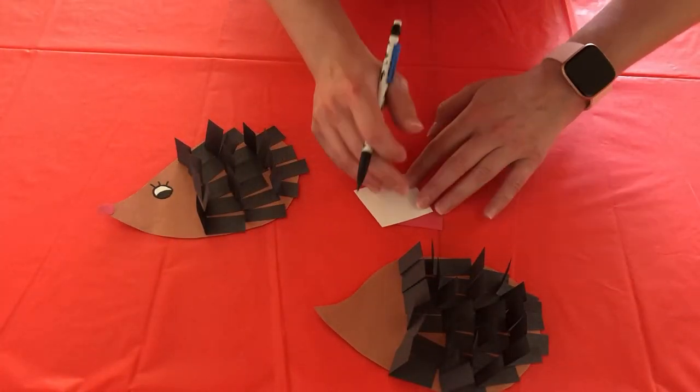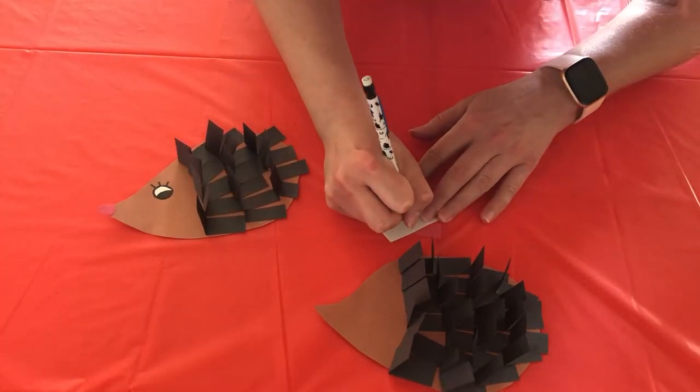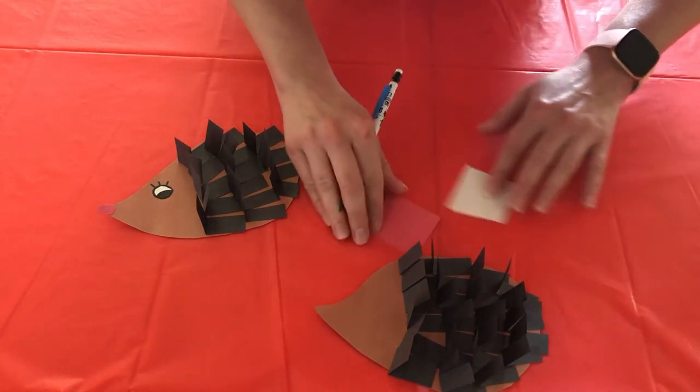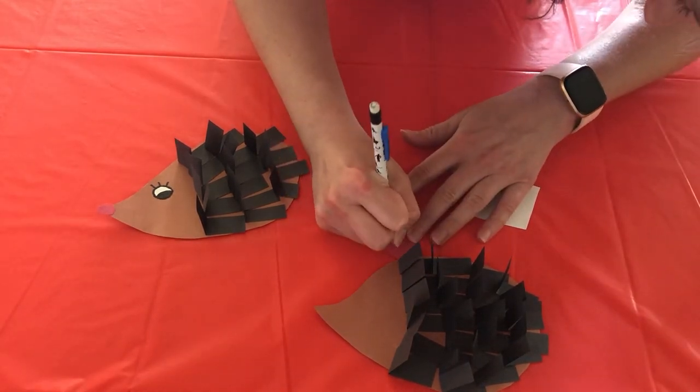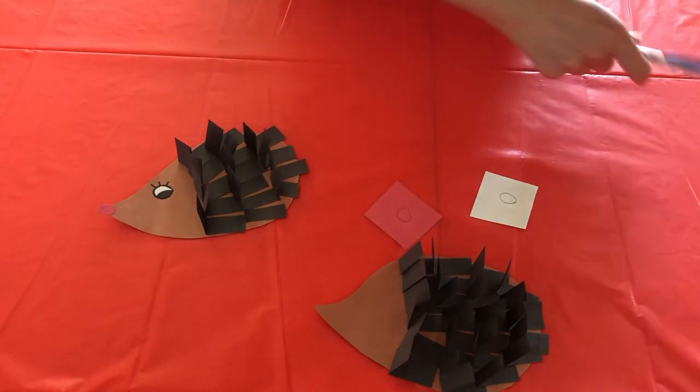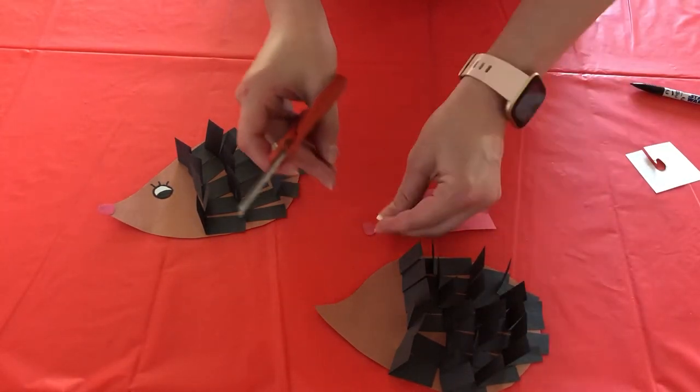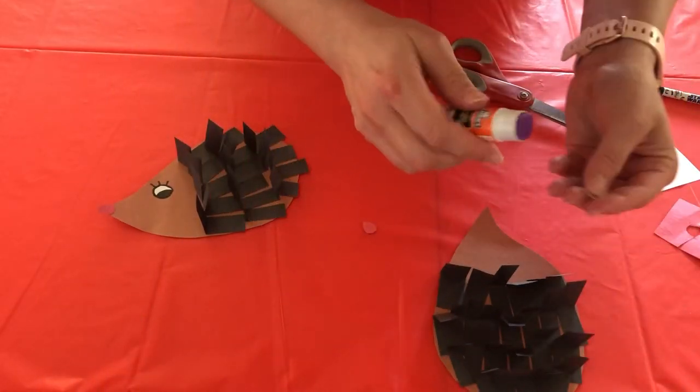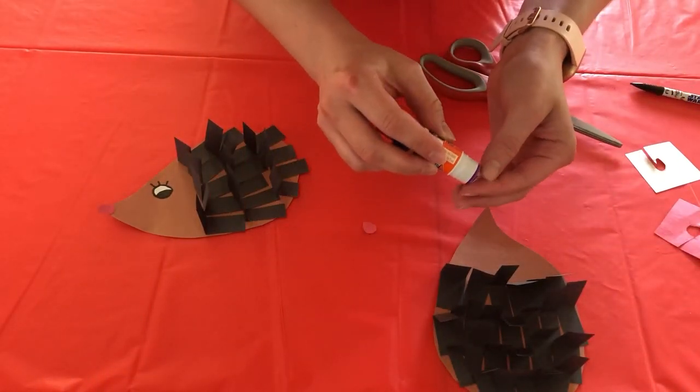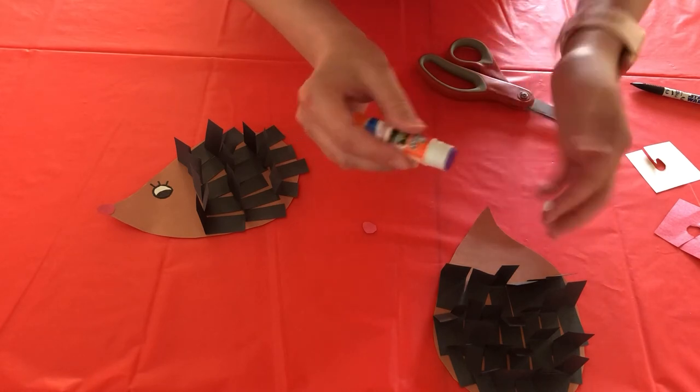So now we are going to make the nose and the eye. Go ahead and cut that out. Now take your pieces and glue them on here.